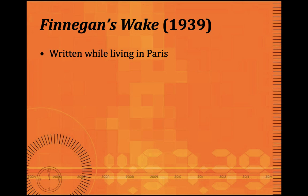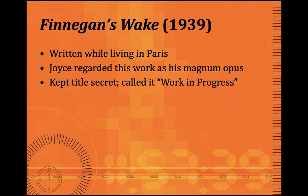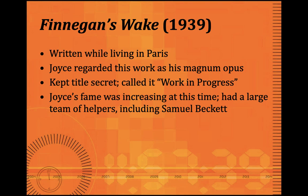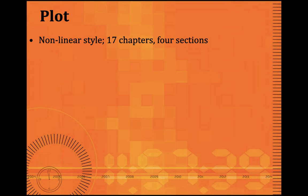Finnegans Wake is Joyce's next novel, published in 1939, the year the Second World War began. It was written while living in Paris. Joyce regarded this work as his magnum opus and kept its title secret, calling it 'Work in Progress.' His fame was increasing at this time and he had a large team of helpers, including Samuel Beckett, who was a scribe to James Joyce. However, Joyce had lots of troubles — financial crises, eye troubles, and his daughter's mental breakdown. Finnegans Wake has a plot that is impossible to narrate: it is non-linear and completely confusing, written in 17 chapters in four sections.